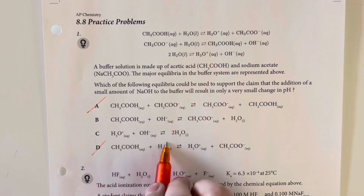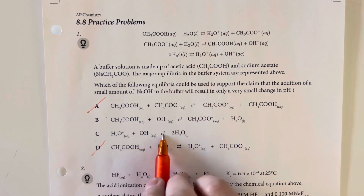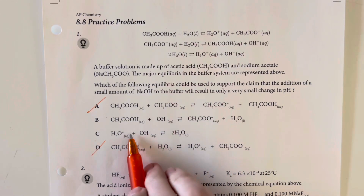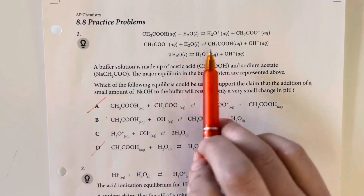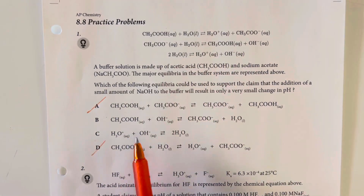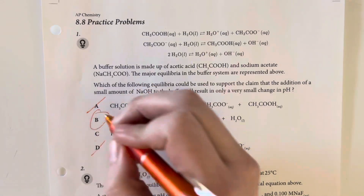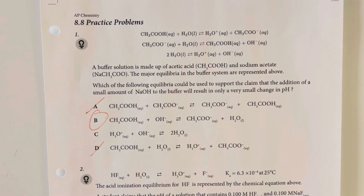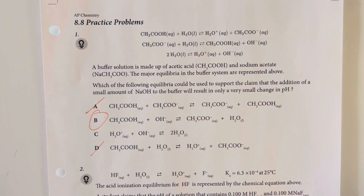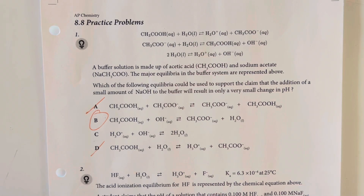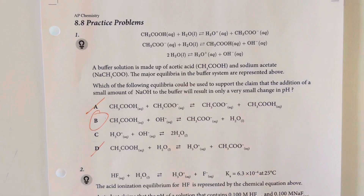The other option where we are precipitating out water but do not have where the hydroxide is being captured is not going to be our best representation. So option B is going to be our best representation because it shows the actual capturing of the hydroxide and where it goes and why that excess acetate is a good buffer.